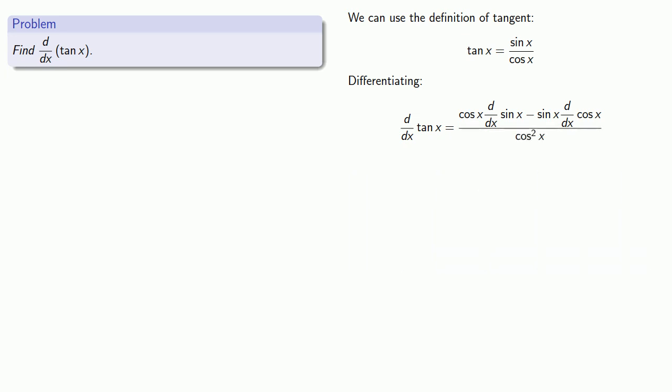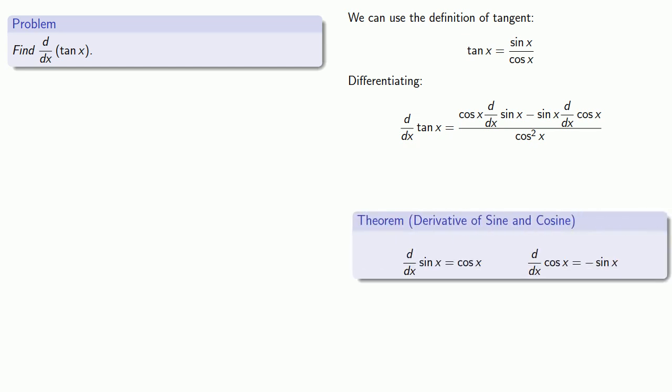So we'll get cosine times derivative sine minus sine times derivative cosine all over cosine squared. But we have some unresolved derivatives, that of sine and cosine. Fortunately, we know what those are, which will give us one form of the derivative of tangent.